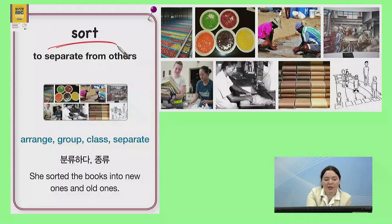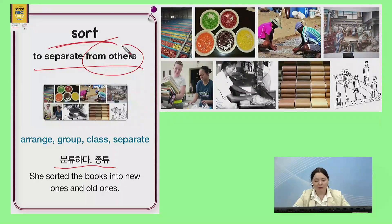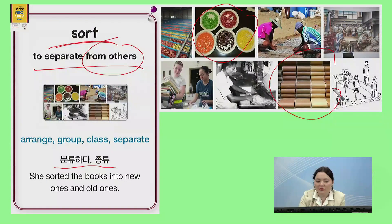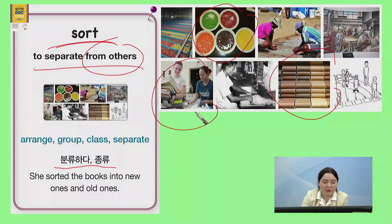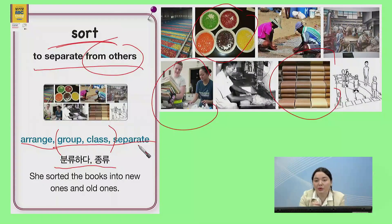The next word is sort. Sort. 한국말로는 분류하다, 종류. It means to separate from the others. So, you might sort M&Ms, sort candy, sort different kinds of leather, sort books or trash in order to recycle it. Sort이랑 비슷한 말은 arrange, group, class, and separate. Group and class are more like 종류, while arrange and separate are like 분류하다, 분리하다.